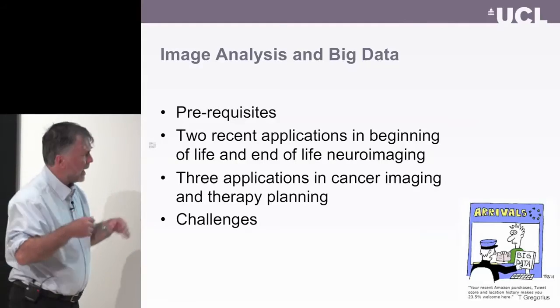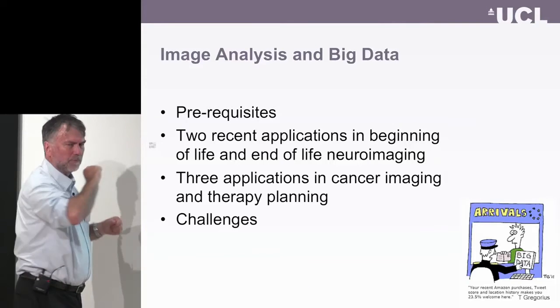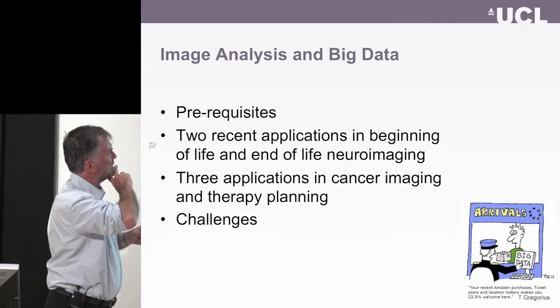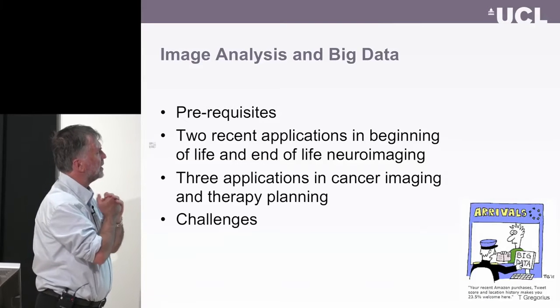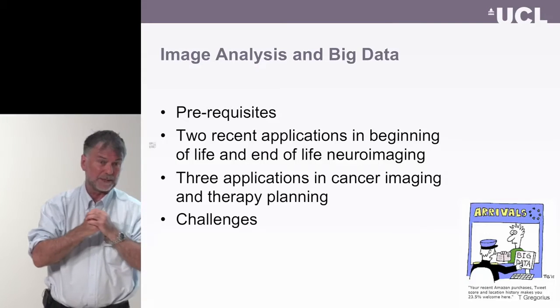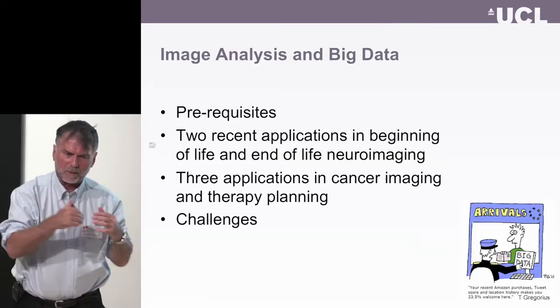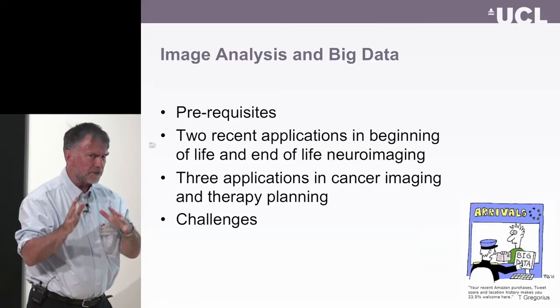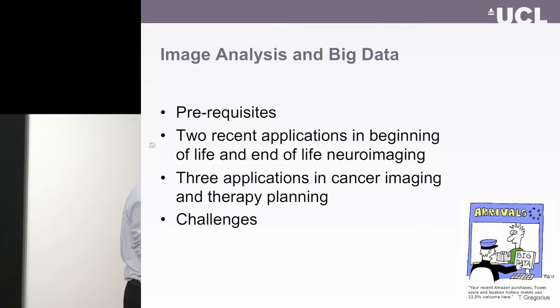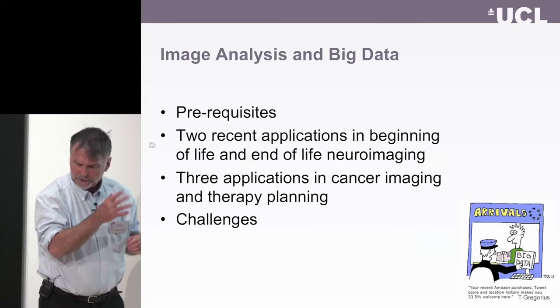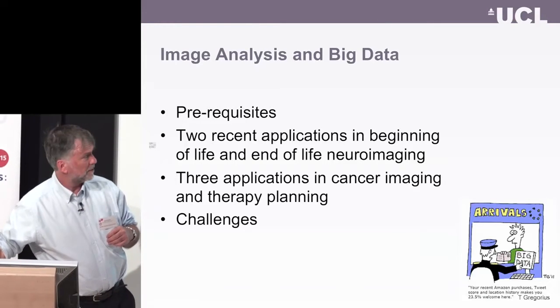The imaging technology and the computational tools associated with that are very important to enable us to do that. I'll structure my talk with just a little bit on some of the prerequisites and technologies available now to help bring all this data together. I'm going to illustrate with five applications: two recent applications from our centre or close collaborators in neuroimaging to illustrate some points, and then three applications in cancer imaging — two taken from the literature and one of which is our own — and then finish up with a couple of comments about some of the challenges.